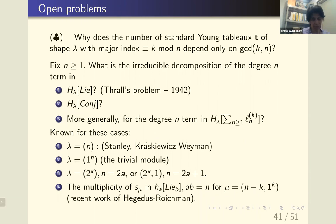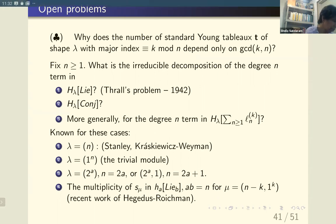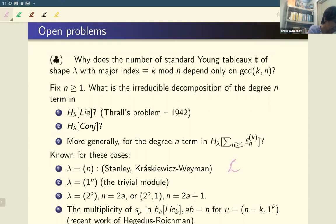The other open problems are: what's the irreducible decomposition for the degree n term in H_lambda plethysm with Lie, or H_lambda plethysm with the conjugacy action? The known cases are when lambda is n (that's just Lie_n), when lambda is 1^n (that's just H_n), and then H_a of E_2. There's also a recent paper of Paul Hegedus and Yuval Roichman that computes the multiplicity of s_mu in a plethysm like this, using cyclic descents — so that's very nice.